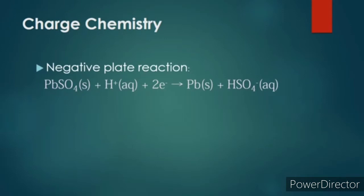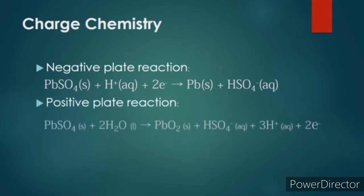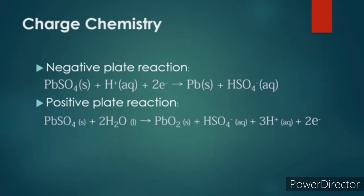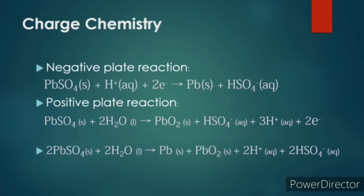Lead sulfate gains two electrons and is reduced into lead again. At the anode, electrons are being pulled out by the EMF source. The anode here has a positive sign. Lead sulfate loses two electrons and reacts with water to give lead 4 oxide.